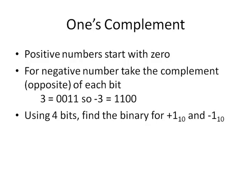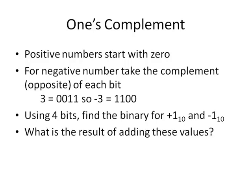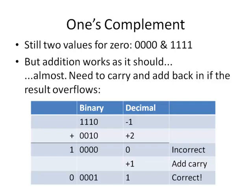Using 4 bits, find the binary for plus 1 and minus 1. Plus 1 is 0001. Minus 1 is 1110. Adding these values together, you should find that adding plus 1 and minus 1 gives the correct result of 0. There are still two values for 0: 0000 and 1111. But addition works as it should, more or less. One situation where we need to use the carry value is that with one's complement, the carry value needs to be added back in to get the correct result from an addition.